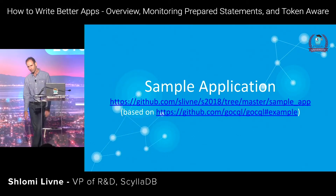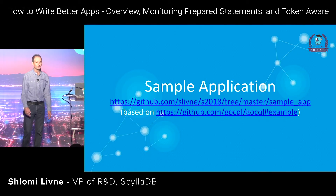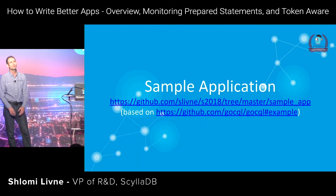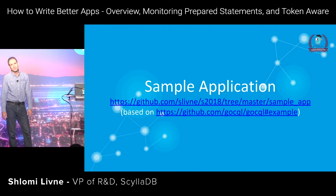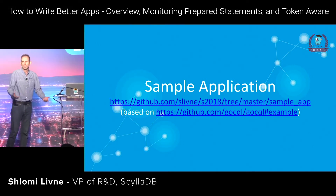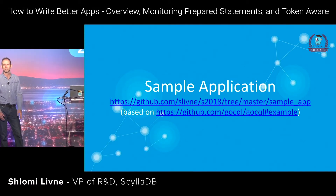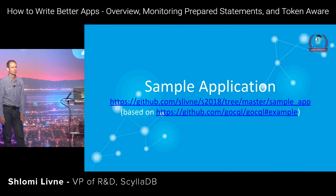For the sake of this session, I've written a sample application in Go. It's following the Go CQL example — I didn't create any new issues, I just copied code and extended it a bit. That's normal. When you start off, you copy code from somewhere and start augmenting it for whatever you want. The question is: did you catch all the items you should have fixed before you go to production?